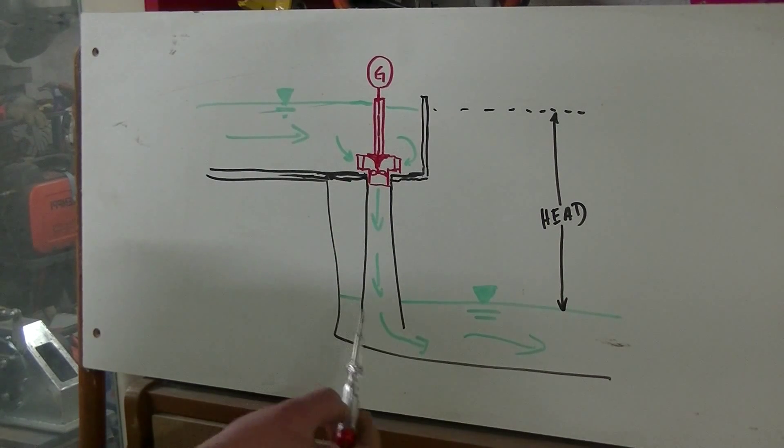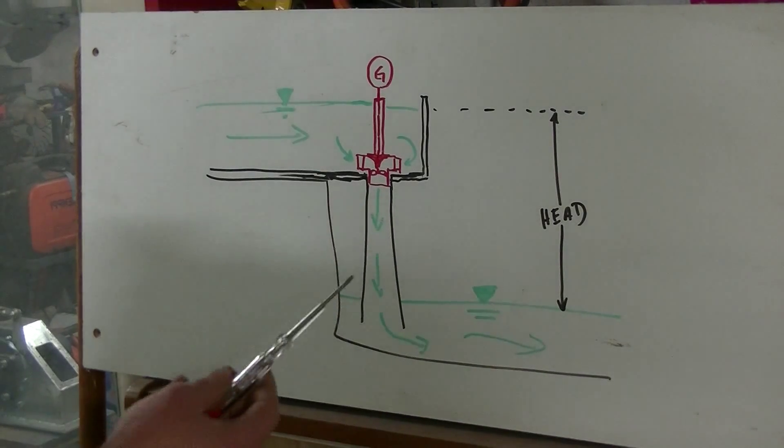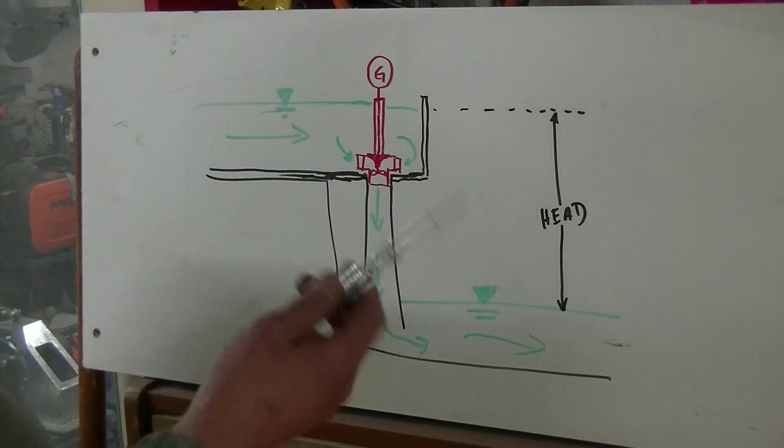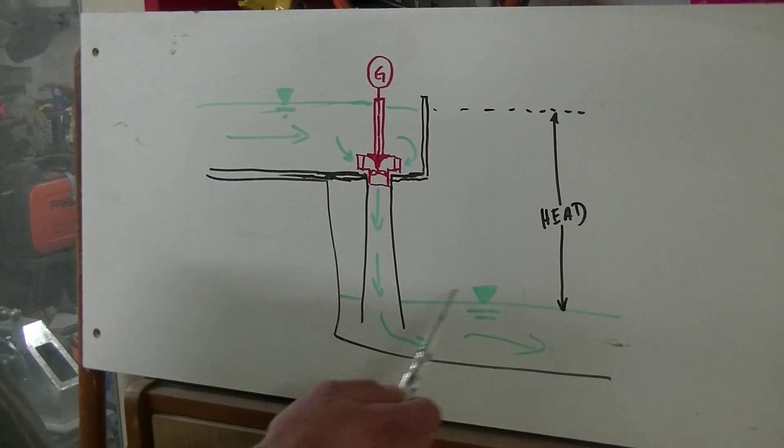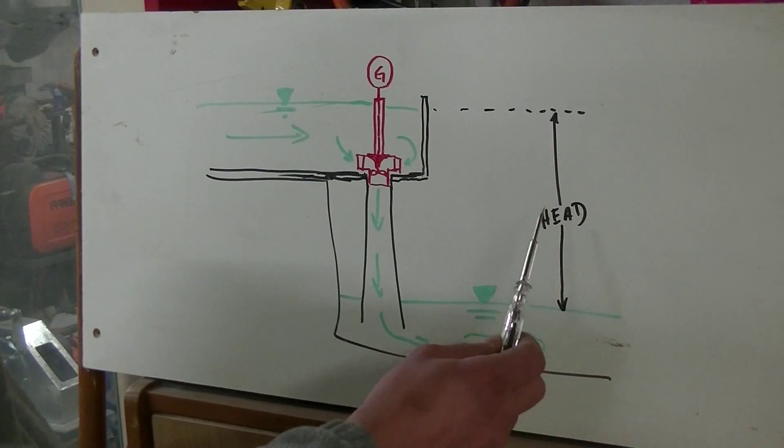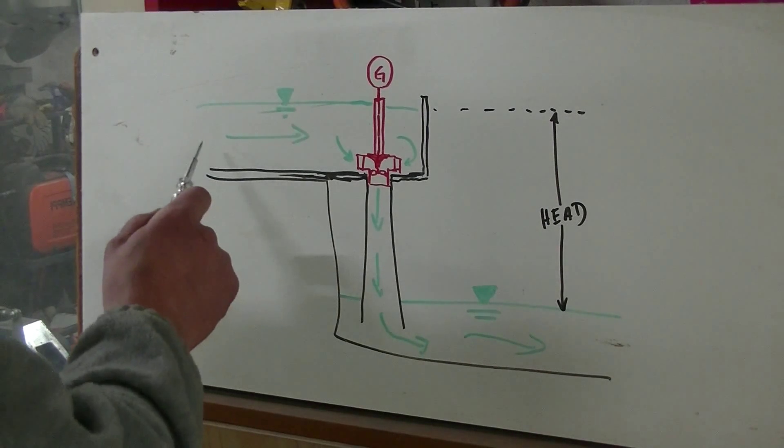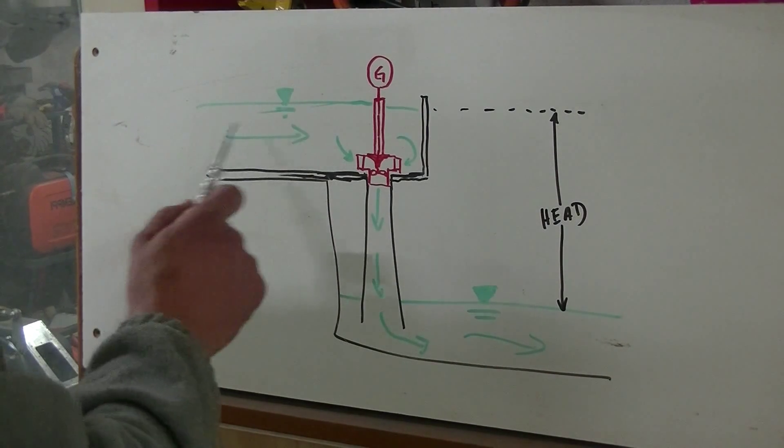In principle, it's very easy. Two important things for all hydro turbines are the difference between the higher and lower level, called the head, and the amount of water flowing or available on your river or stream, called the discharge in liters per second.